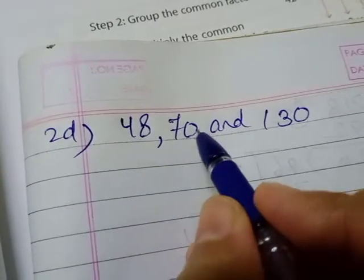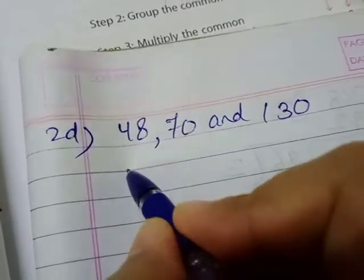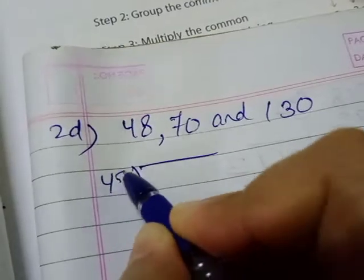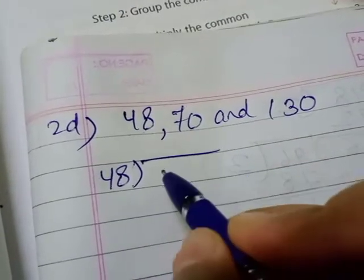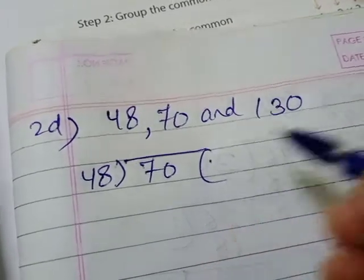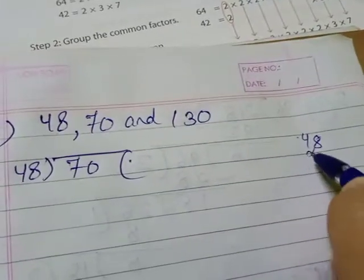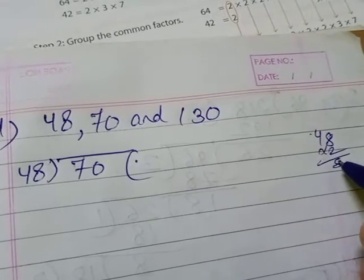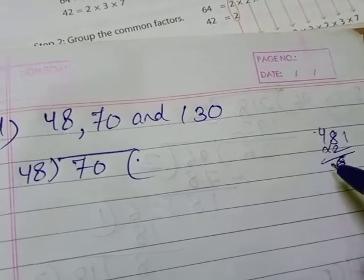So that is 48 in divisor we will write and 70 in dividend. 48 goes into 70 one time. First of all you check: two eights are sixteen, two fours are eight, it will be more, so 48 one time.